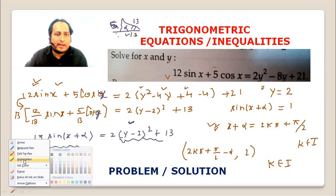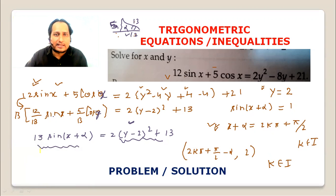Alpha is the fixed angle such that sin alpha equals 5 upon 13 and cos alpha equals 12 upon 13.